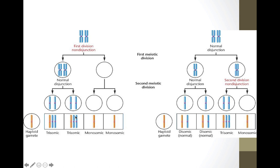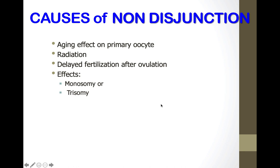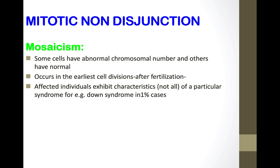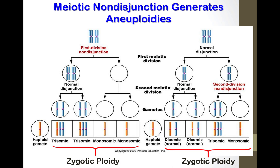This is called Mosaicism — some cells are trisomic or disomic, others are normal. Mitotic non-disjunction generates aneuploidies: disomic in the first cell, trisomic in the first and second cells.